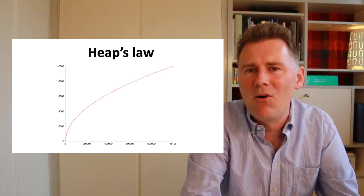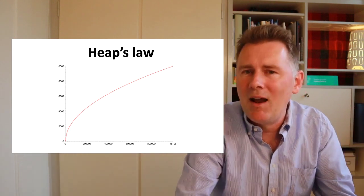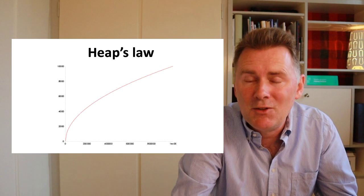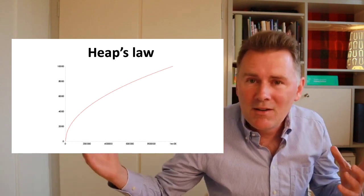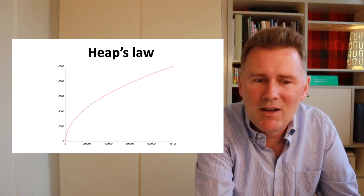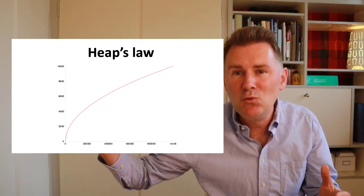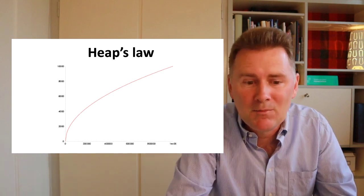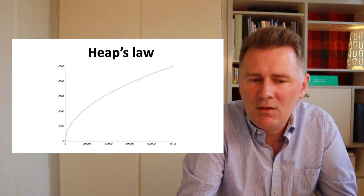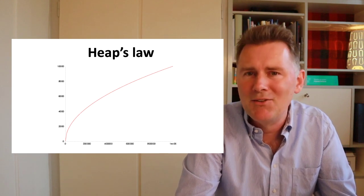Another example would be Heap's Law, which describes the mathematical relation between the length of a text and the number of different words that you find in that text. Linguists call this the type frequency of a text. So the longer a text, the more different words you find. But crucially, the relation is not a straight line. As the text gets longer and longer, you find fewer and fewer new types because you've already found so many words. Now, linguists have found generalizations that can be expressed mathematically. So this we can count as the second similarity between linguistics and the natural sciences.